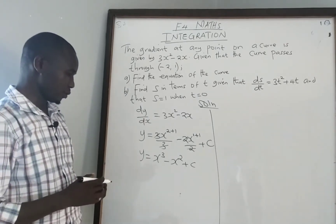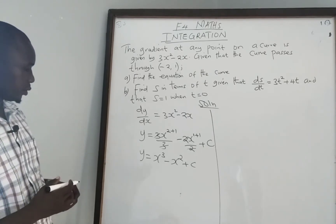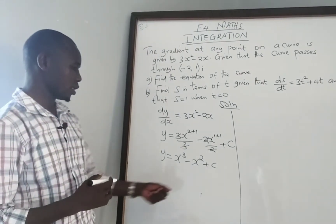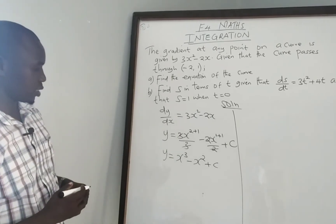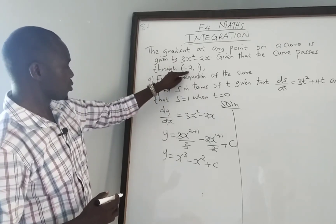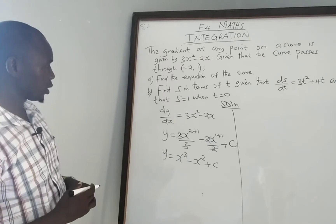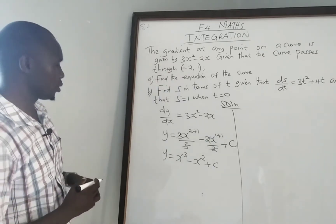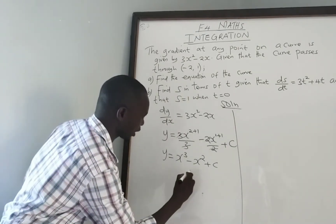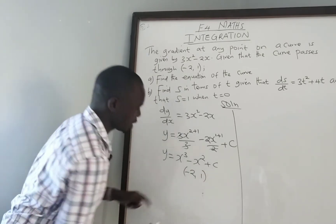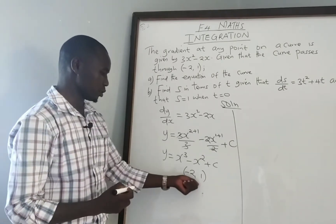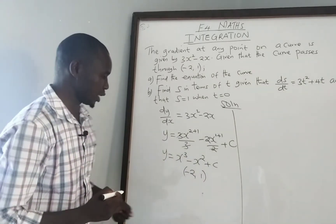This is not the complete answer because this is the general function of that particular curve. We need the specific equation by inserting the correct value of c. To get c, we are told the curve passes through the point (−2, 1), which means x equals −2 and y equals 1. We substitute these values back into the general equation.